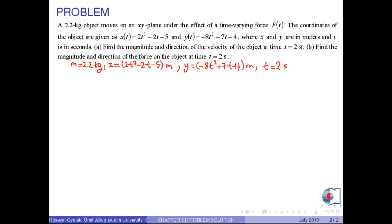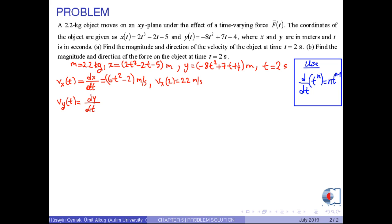First of all, let us find the x and y components of the velocity. Since we know that velocity is the first time derivative of the position, we have vx(t) = dx/dt. If we use the expression for x(t), we get 6t² - 2 meters per second. Then at t = 2 seconds, we have vx(2) = 22 meters per second. By the same way, vy(2) = -25 meters per second.